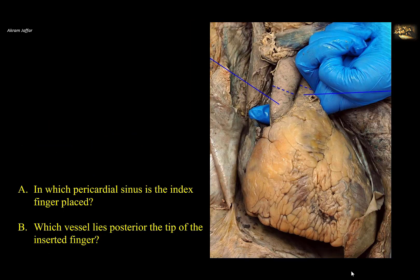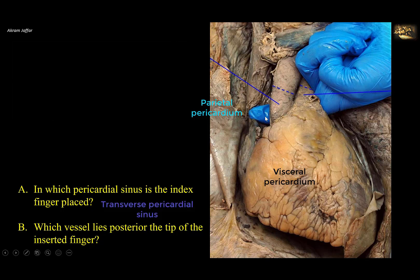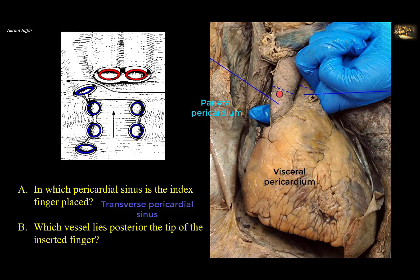In which pericardial sinus is the index finger placed, and which vessel lies posterior to the tip of the inserted finger? This is a view of the heart in situ in the middle mediastinum. After cutting the pericardium, the pericardial cavity is located between the parietal pericardium and the visceral pericardium directly applied to the heart. The transverse pericardial sinus can be accessed by placing a finger behind the aorta and pulmonary trunk; the finger slides to the right in front of the superior vena cava, which is formed by the left and right brachiocephalic veins. It is the superior vena cava that lies posterior to the tip of the inserted finger.